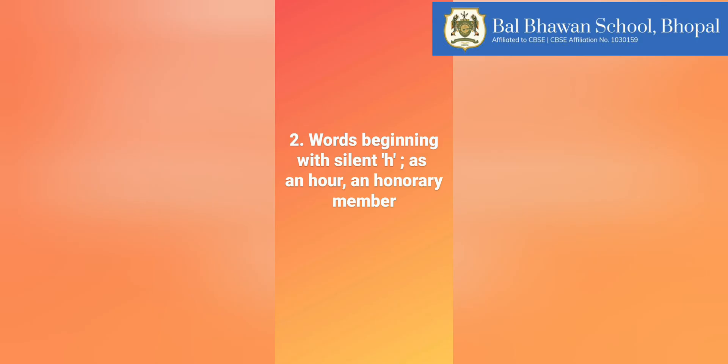'An' is also used before words beginning with a silent H. For example: an hour, an honest man, an iris, an honourable man, an honorary member.